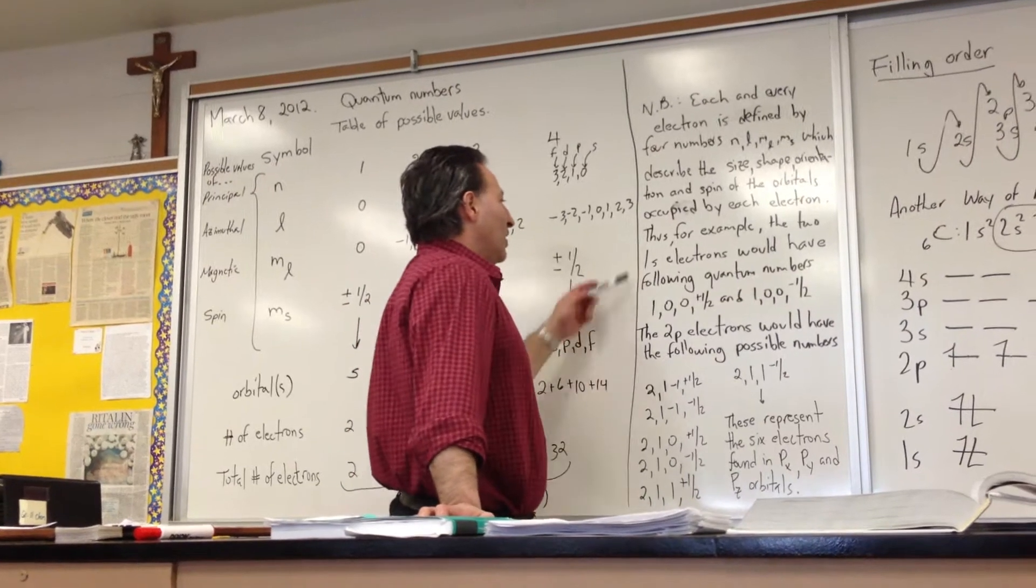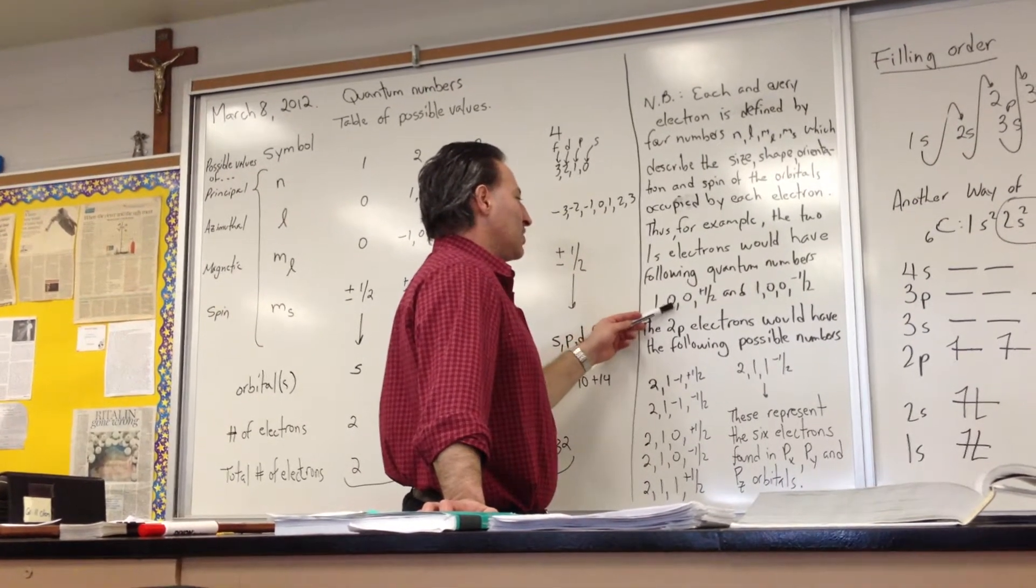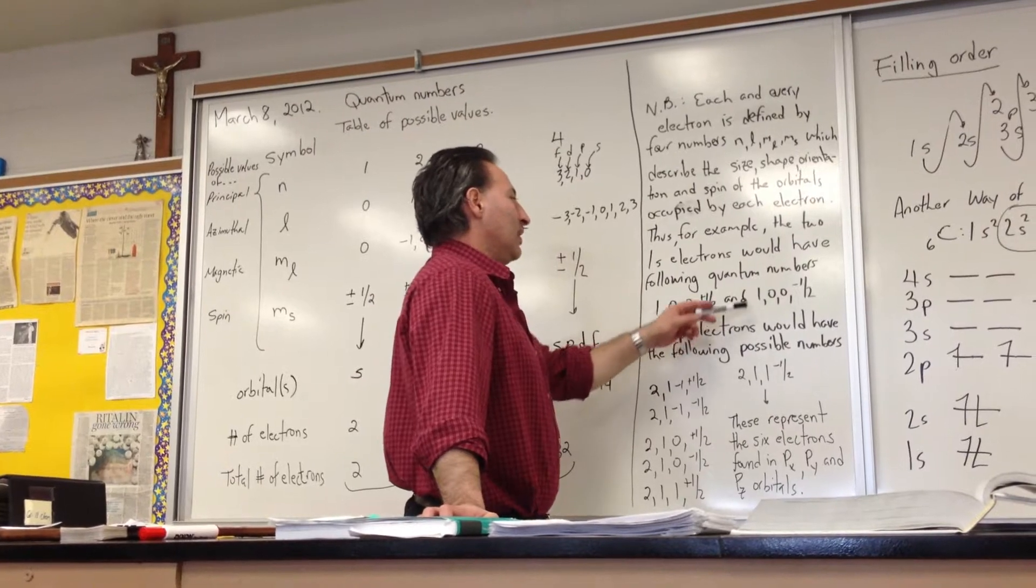Thus, for example, the two 1s electrons would have the following quantum numbers: one, zero, zero, plus one-half, and one, zero, zero, negative one-half.